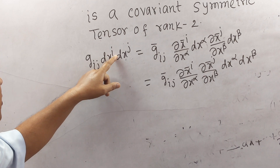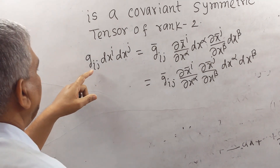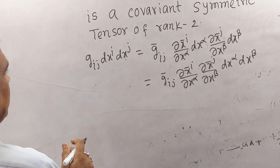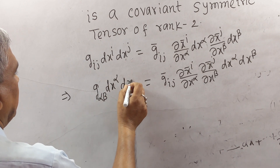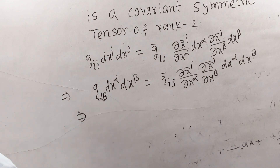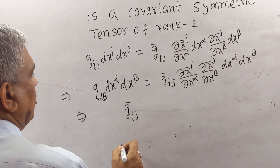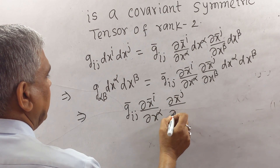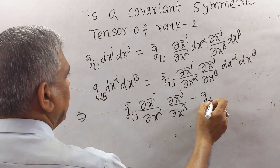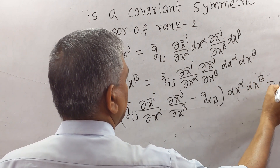On the left side, I is the dummy suffix and J is another dummy suffix. We may replace a dummy suffix with any other suffix. So if we write α in place of I and β in place of J, the left-hand side becomes g_αβ · dxα · dxβ. This implies: ḡ_IJ · (∂x̄I/∂xα) · (∂x̄J/∂xβ) · dxα · dxβ − g_αβ · dxα · dxβ = 0.